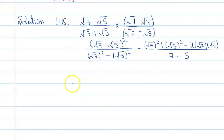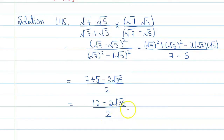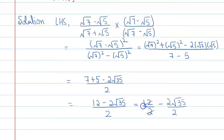So in the numerator we get 7 + 5 - 2√35, and in the denominator we get 2. This becomes (12 - 2√35) / 2. Further solving, we split it as 12/2 - 2√35/2. The 2s cancel, giving us 6 - √35.